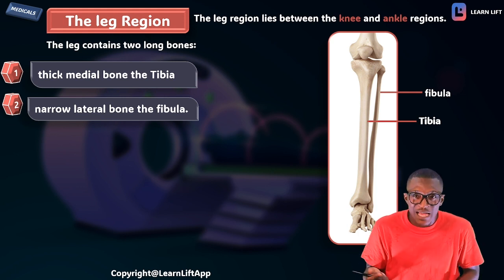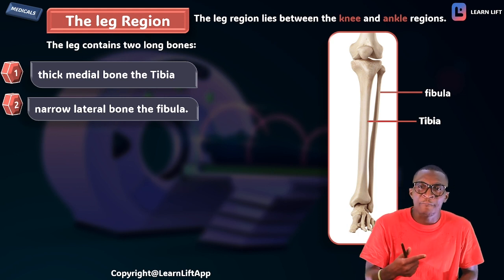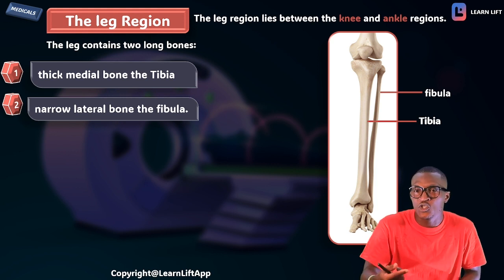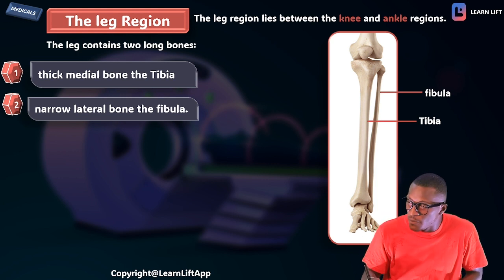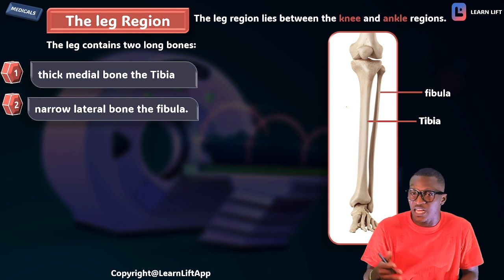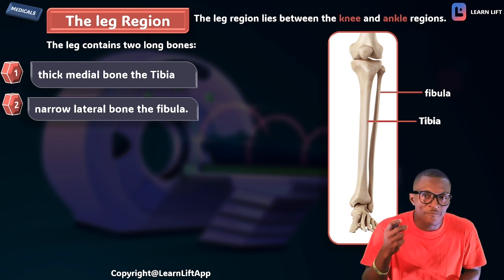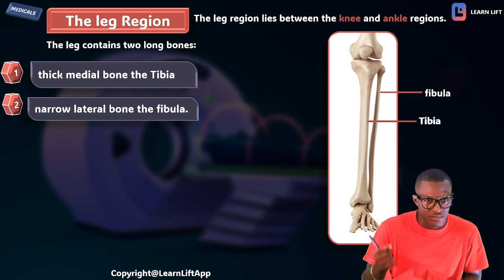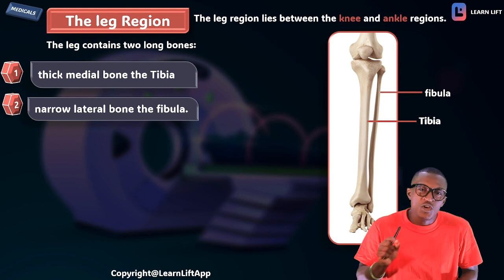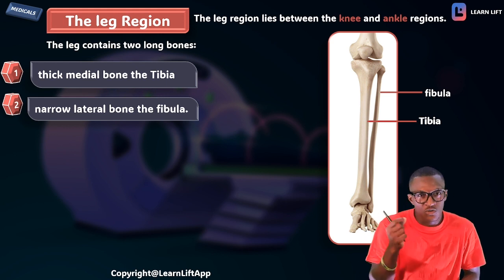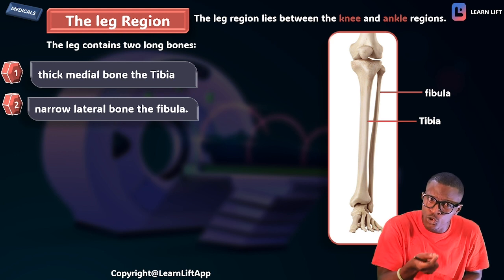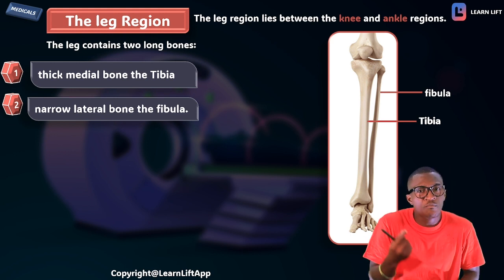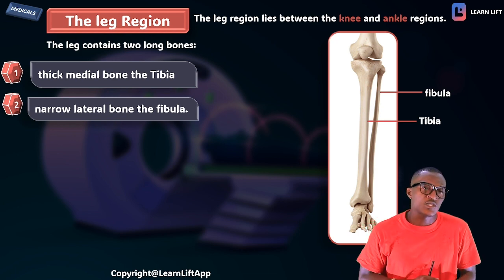The fibula is also called the peroneal bone, so when you hear 'peroneal nerve' or 'peroneal bone,' that is referring to the fibula. Take note: fibula is also called peroneal. The tibia is medial and the fibula is lateral — close to the midline is medial, far away from the midline is lateral.